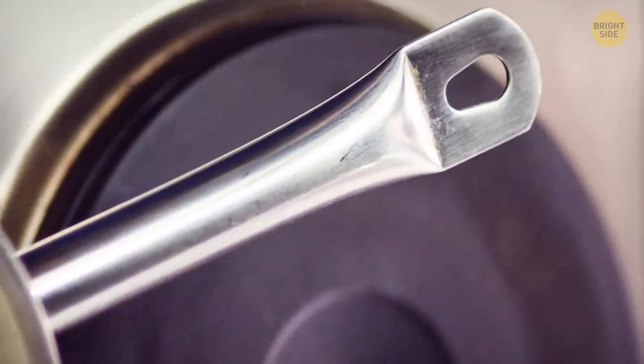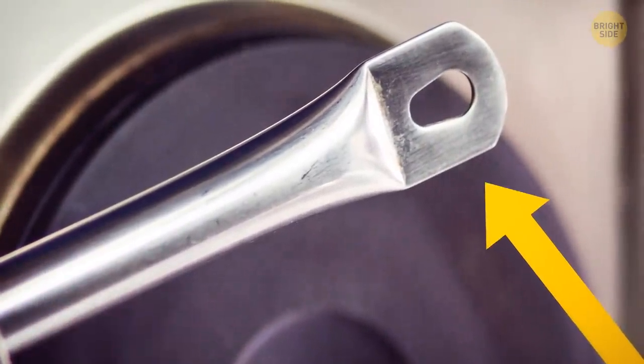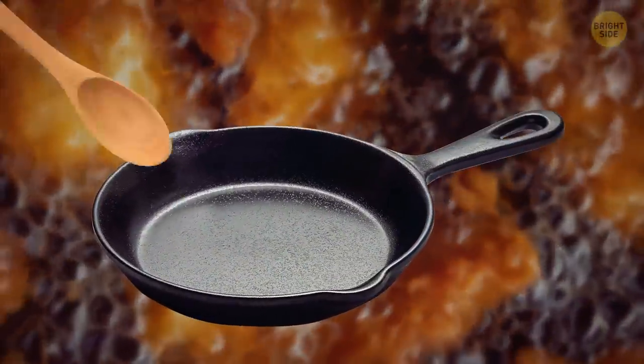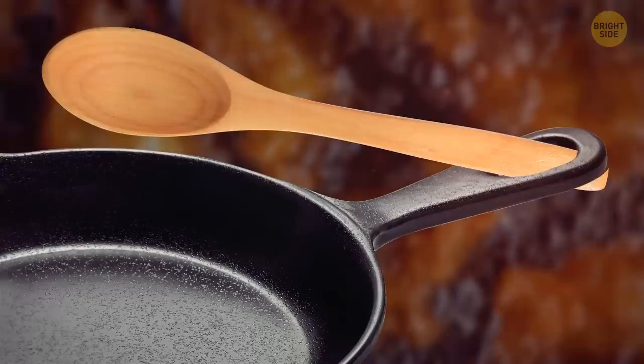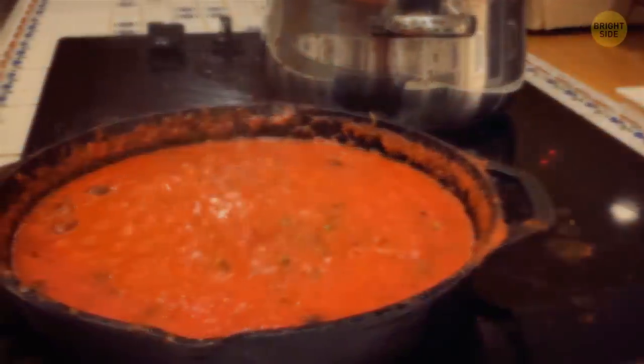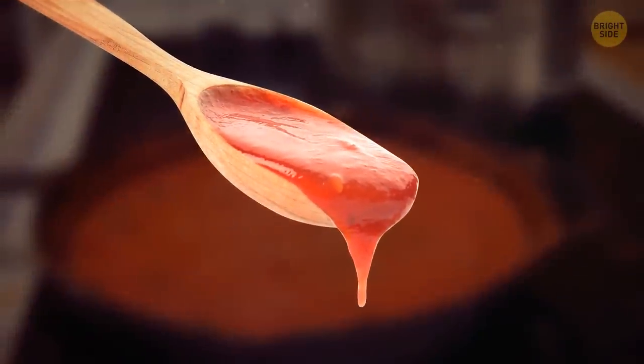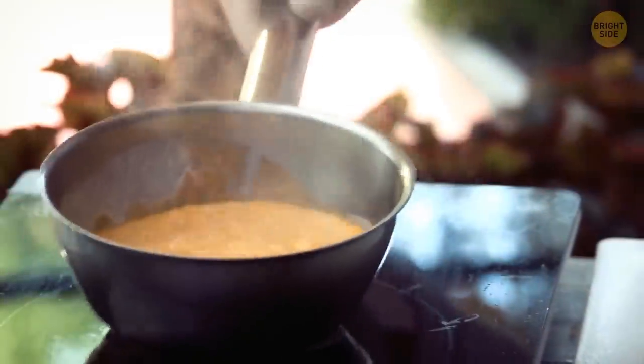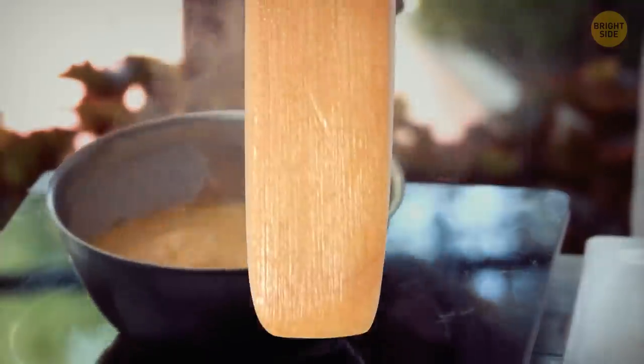Those holes at the end of the handles aren't just there for you to hang your pans easily. You can also place your cooking spoon in there while making a meal. It'll hang right above the pan and the sauce won't spill around. Make sure to tap off the sauce or food beforehand though so that it doesn't go down the spoon's handle.